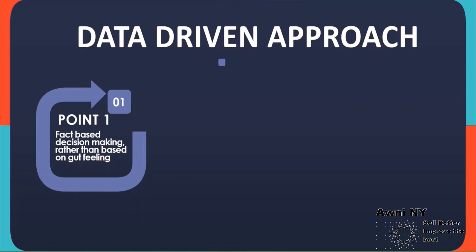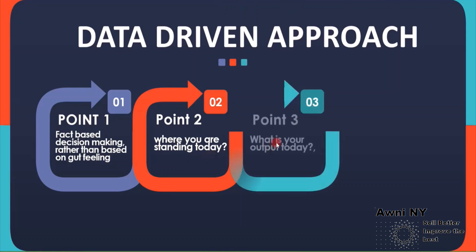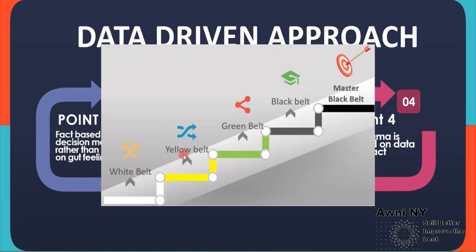Let's understand this further. The improvements are based on facts, because unless you know where you are standing today and how you could improve — unless you know what your output is today — how can you improve your output? Six Sigma is based on data and fact. Once you go higher from white belt to yellow belt, from yellow belt to green belt, and then to black belt, you will see that lots of statistics get involved. You want to make sense out of those numbers. This is a data-driven approach in Six Sigma.